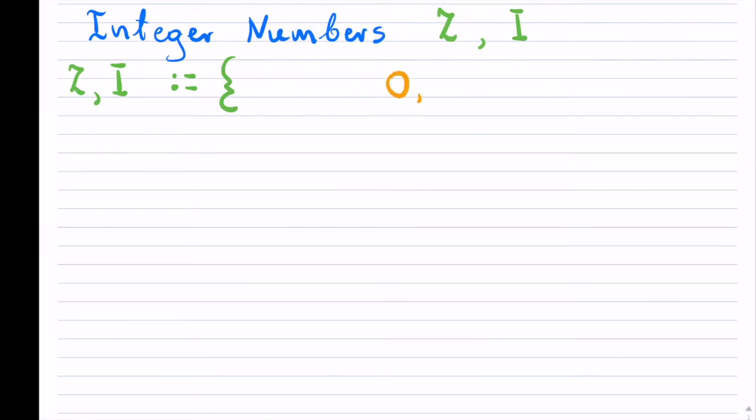It includes all your counting numbers. 1, 2, 3, and it goes on to infinity. But it also includes all your negative whole numbers. And this goes on to infinity in the opposite direction.